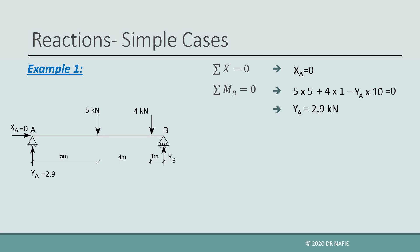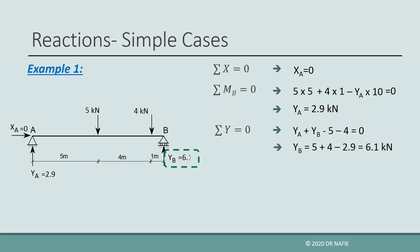After finding YA, we can now use sigma y equals zero, which has only one unknown, YB. The equation contains four terms: YA and YB pointing upward, and minus 4 kN and minus 5 kN pointing downward. Solving gives YB equal to 6.5 kN. At this stage, all reactions have been evaluated. Any additional equilibrium equation will be redundant and will not provide additional information.